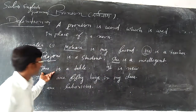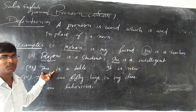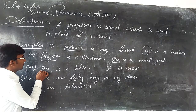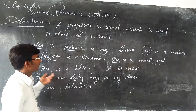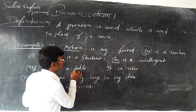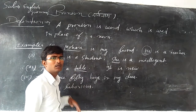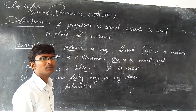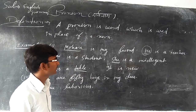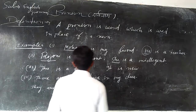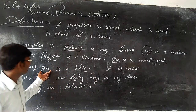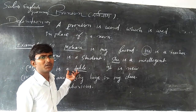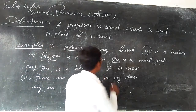This is a table. We are talking about the table — table is a noun. So instead of repeating the word table, we use 'it' or 'this' in its place. So 'this is a table' — here 'this' is used as a pronoun in place of the noun table.